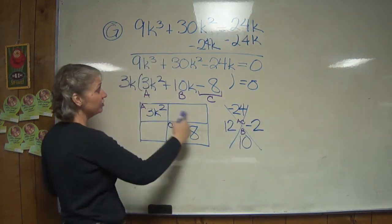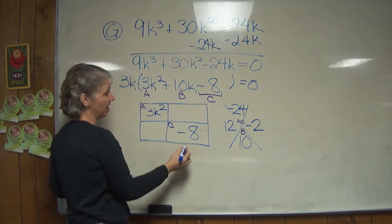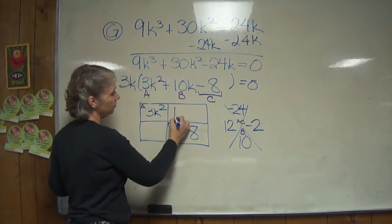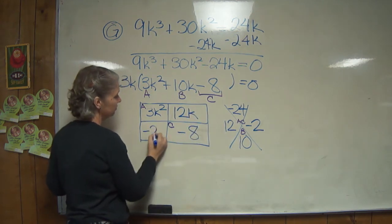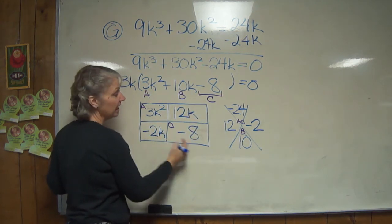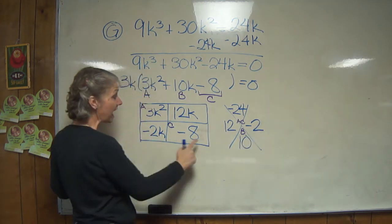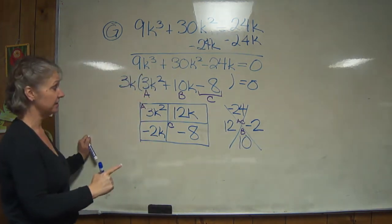So this goes back in here, and remember we need variables in the box. So we have 12k and negative 2k. Okay, unless all three of these are negatives, we have to pay attention to the negatives here.